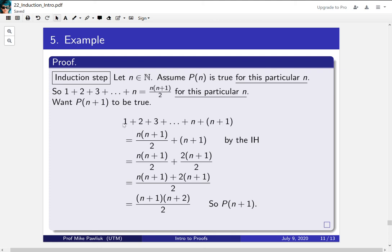So looking at the chain of equalities, we have that the sum of the first n+1 numbers is equal to the expression we wanted to. That's P(n+1). And that's it. That's our whole proof.